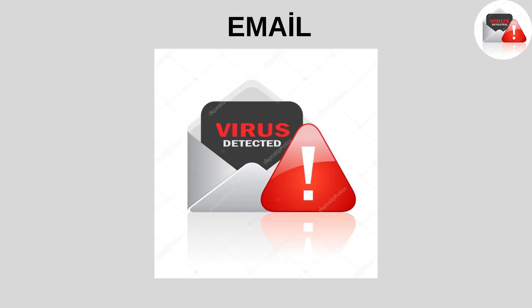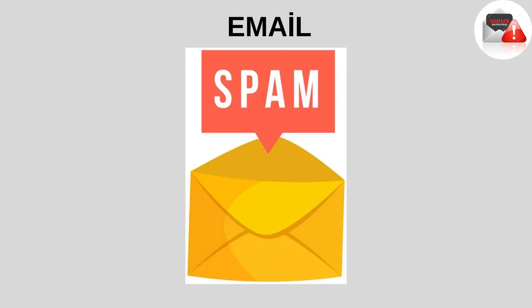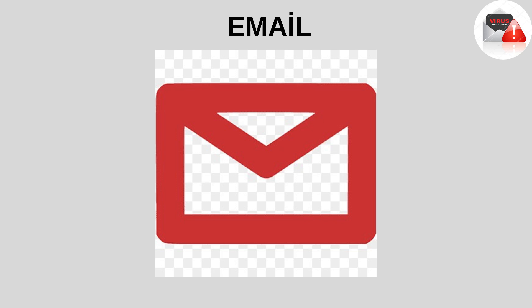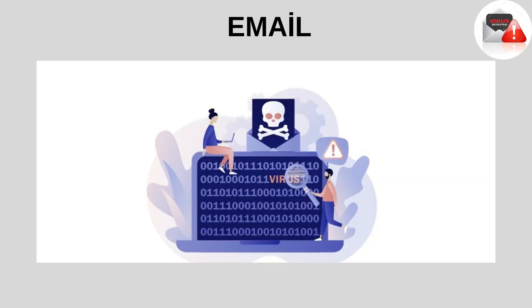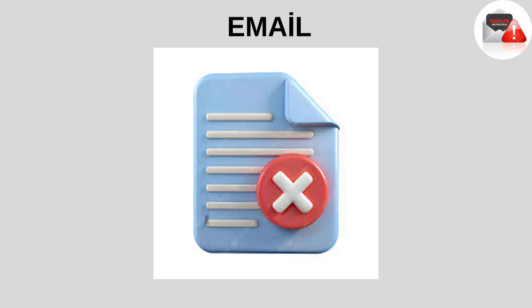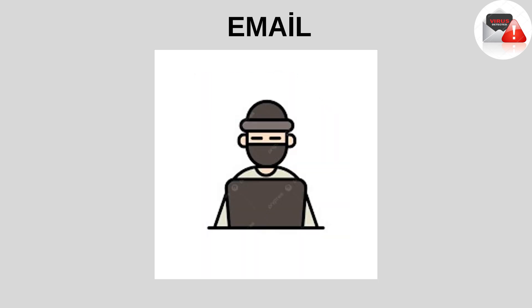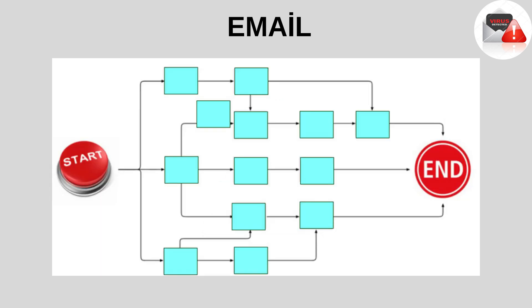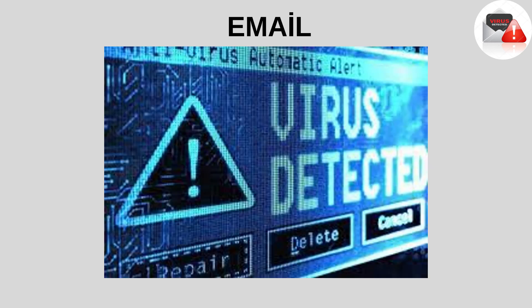Email viruses are one of the most common ways malware is transmitted. These viruses are usually spread through email attachments or malicious links in messages. When a user opens an attachment or clicks on a link in an unknown or suspicious email, the virus infects the computer. On infected computers, email viruses can corrupt files, steal personal information, or slow down the computer. They also spread quickly by automatically sending themselves to people in the email address book.